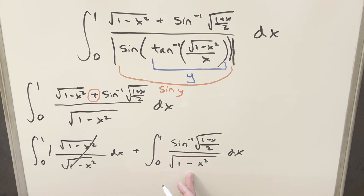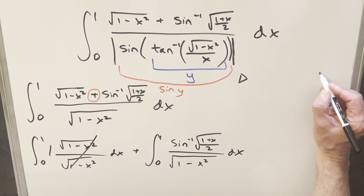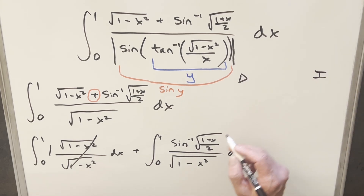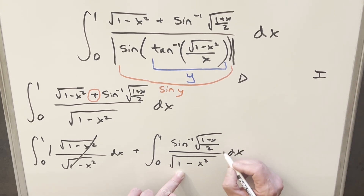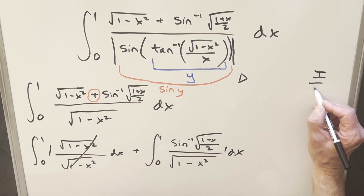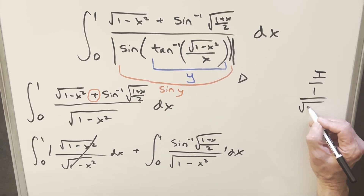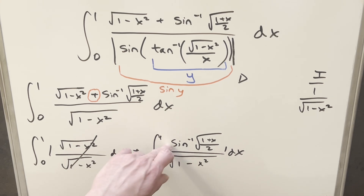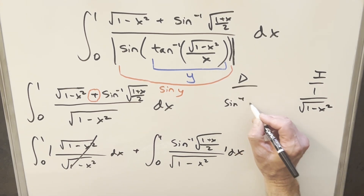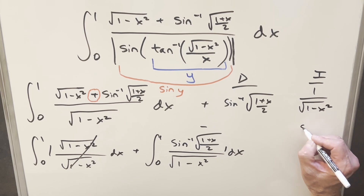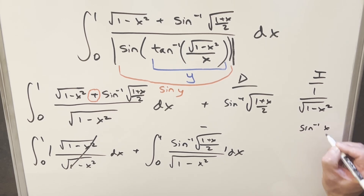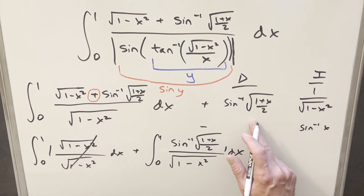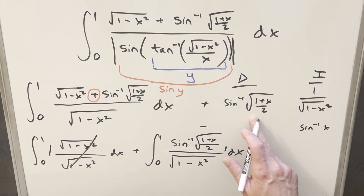For the remaining integral, I think we can do this with integration by parts — we'll use the DI method, or tabular integration. I want to integrate a 1 by integrating 1/√(1 - x²), which is a well-known integral, and then differentiate the arcsin stuff. The integral of 1/√(1 - x²) is just arcsin(x). The derivative is a bit more complicated, so let me get some more space to work on it.